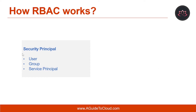A security principle is an object that represents a user, group, or service principle that is requesting access to Azure resources. A user is an individual who has a profile in Azure Active Directory. A group is a set of users created in Azure AD. A service principle is a security identity used by applications or services to access specific Azure resources.